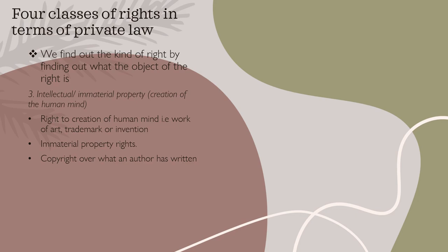Then we have intellectual or immaterial property, which is the creation of the human mind — so the right to the creation of the human mind. Examples include a work of art, a trademark, or an invention. Immaterial property rights include copyright over what an author has written. This is why when you have a new business idea, they always say go and have it patented, or get copyright over an article or a book that you have written, so that without your permission, no one else can use it or sell it as their own — because you have intellectual or immaterial property rights, the right to the creation of your human mind.